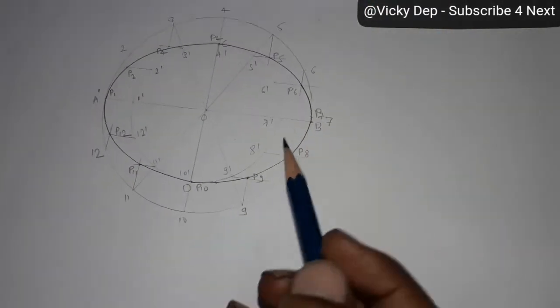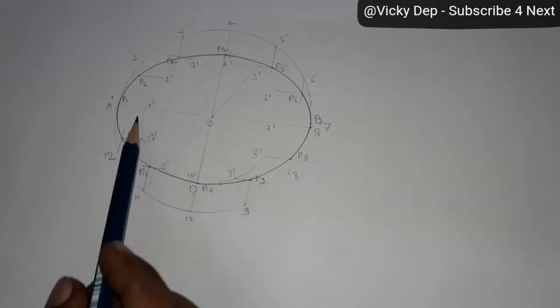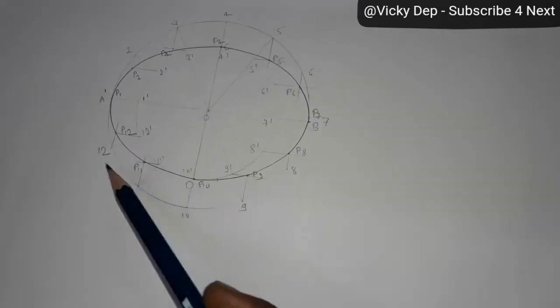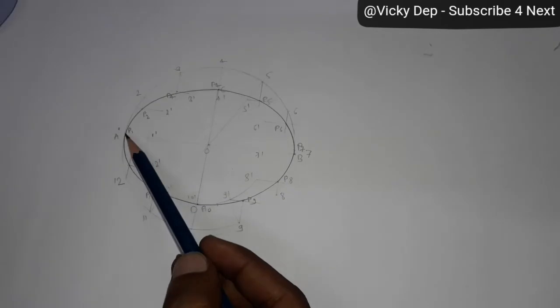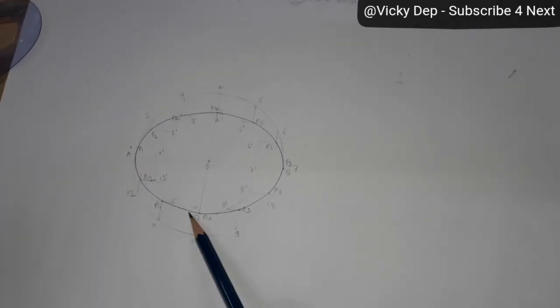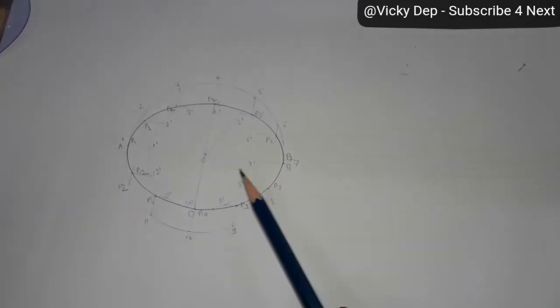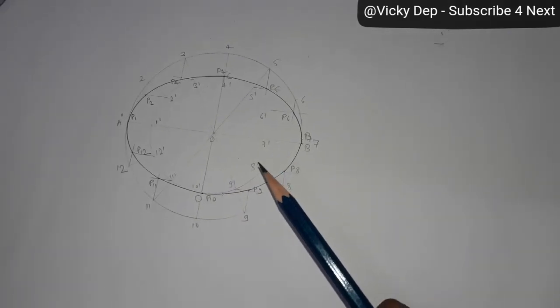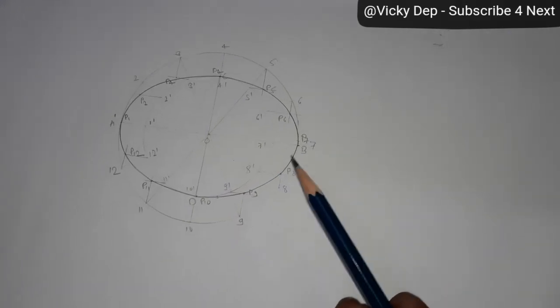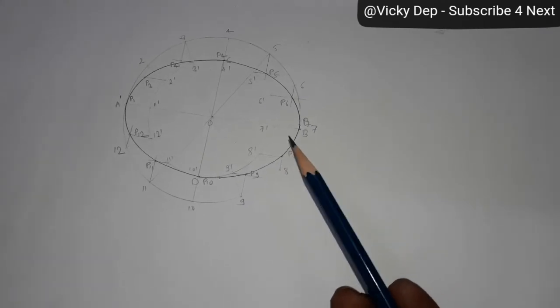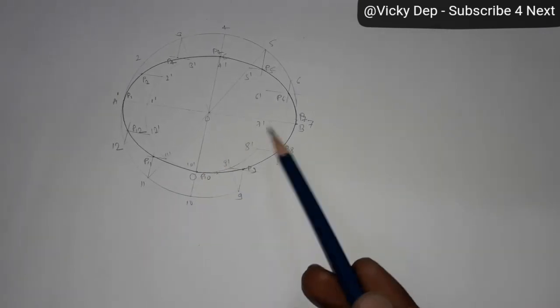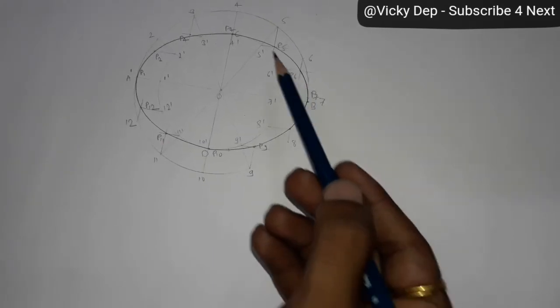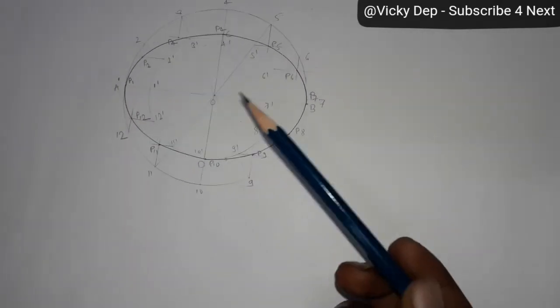So here you can see this complete ellipse and it came from this all 12 points P1 to P12. This is very useful and we have many applications in civil engineering and mechanical engineering like pipes, gears, cylindrical tanks and even our path of the earth is like this. Okay, thank you very much for watching this.